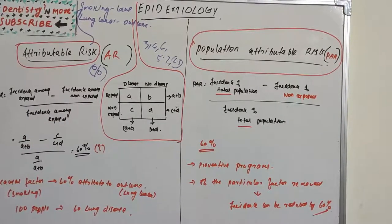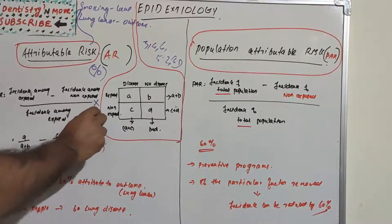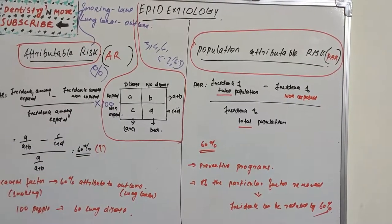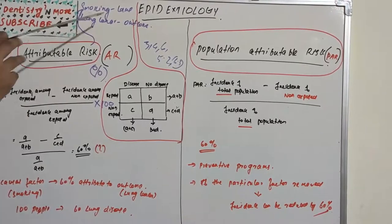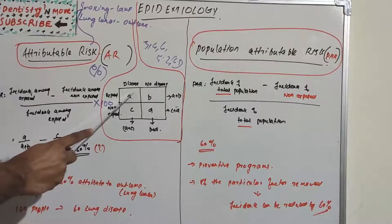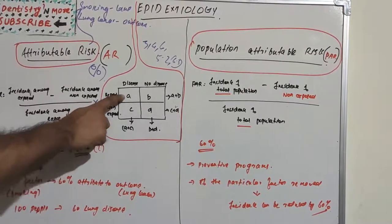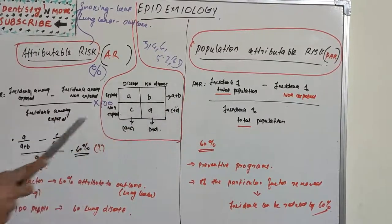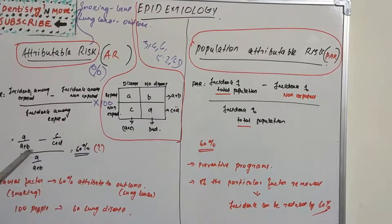The formula for attributable risk is: incidence among exposed minus incidence among non-exposed, divided by incidence among exposed. In terms of a 2x2 table notation, incidence among exposed is a divided by (a + b), and incidence among non-exposed is c divided by (c + d).